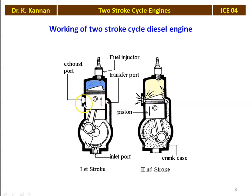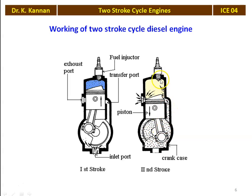In similar operation: when the piston moves upward, first the transfer port closes, then the exhaust port closes, and the air inside the engine cylinder gets compressed. Using the fuel injector, a small quantity of fuel is injected and combustion takes place, moving the piston downward. During the downward movement, first the exhaust port opens and the air in the crankcase gets compressed. The compressed air goes into the engine cylinder through the transfer port. All operations are completed in one revolution of the crankshaft or two strokes.